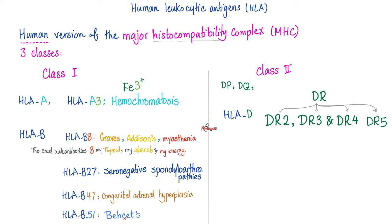HLA-B27 is associated with the famous seronegative spondyloarthritides, including the PAIR mnemonic: P — Psoriatic arthritis; A — Ankylosing spondylitis; I — Inflammatory bowel disease-related arthritis like Crohn's and ulcerative colitis with arthritis; R — Reactive arthritis, formerly known as Reiter syndrome. HLA-B47 is associated with congenital adrenal hyperplasia, and HLA-B51 with Behçet syndrome.